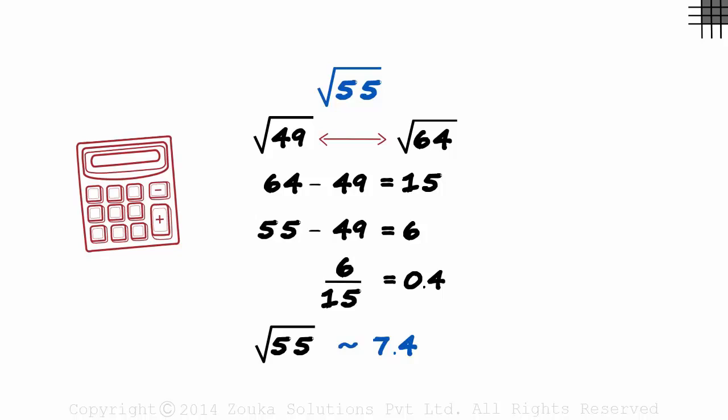First we found out the perfect squares 55 lies between. Then we found out how far 55 is from 49 relative to how far 64 is from 49. If you use the calculator, you would get the value as 7.416 which is very close to 7.4.